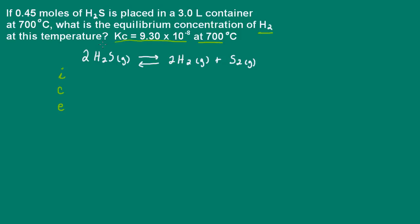We're told that 0.45 moles of H2S is placed in a 3-liter container. Our equilibrium concentrations are going to be in moles per liter, so let's calculate the molarity. We have 0.45 moles divided by 3 liters, which gives us the concentration of H2S — that's 0.15 molar. I'll put this into my table for the initial concentration.